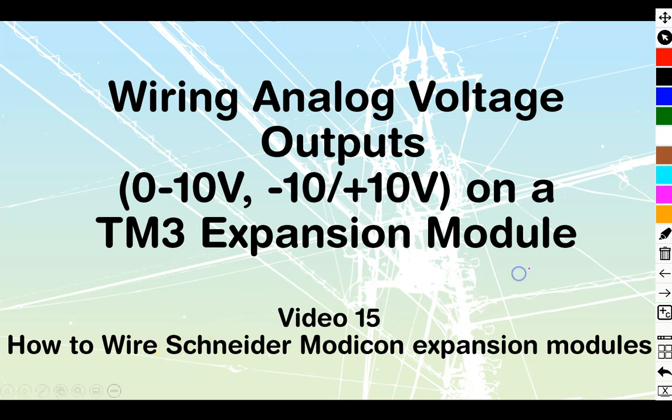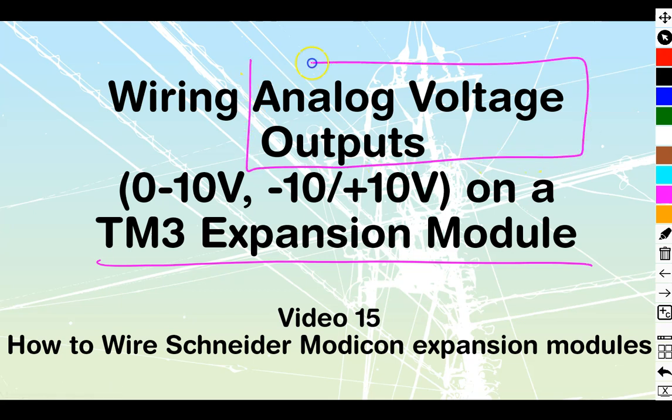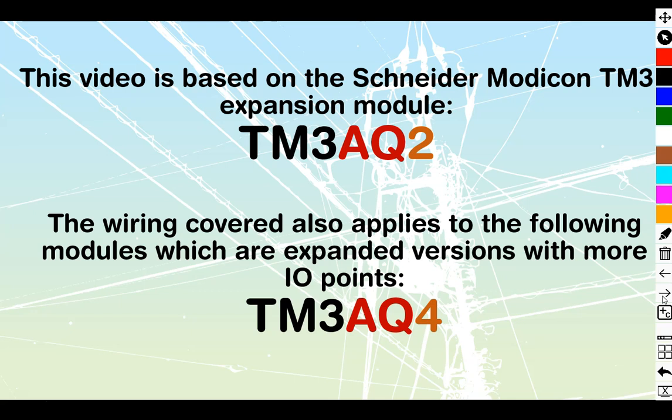Video number 15 in the Schneider Modicon TM3 Expansion Module Series. We're going to take a look at wiring analog voltage outputs using 0 to 10 volt or minus 10 to plus 10 on a TM3 Expansion Module. Specifically, we're going to be dealing with the AQ2 module over here. It's an analog output that has two output points off of it.